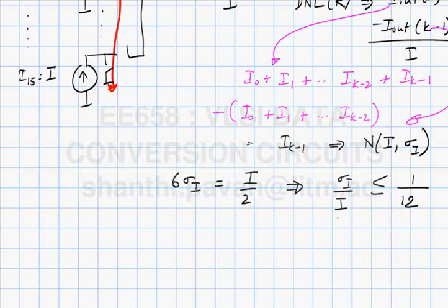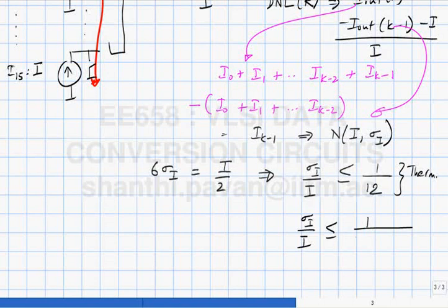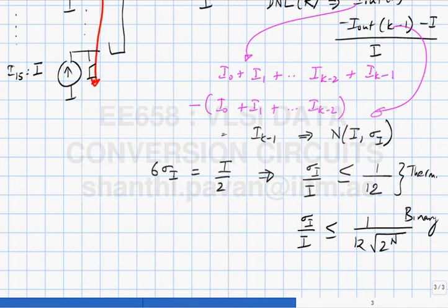For the thermometer-coded DAC, to ensure monotonicity with 6-sigma certainty, you need 6*sigma_i ≤ i/2, which gives sigma_i/i ≤ 1/12. For the binary-weighted DAC, we found sigma_i/i must be ≤ 1/(12 * root(2^n)). To achieve the same worst-case DNL, the precision required in a binary-weighted DAC is much larger — by a factor of root(2^n) — compared to the thermometer-coded case.